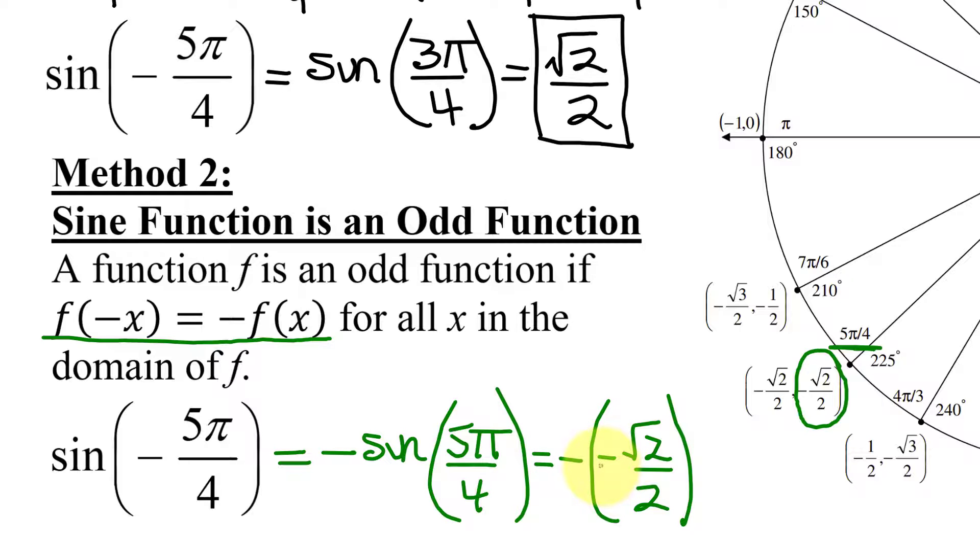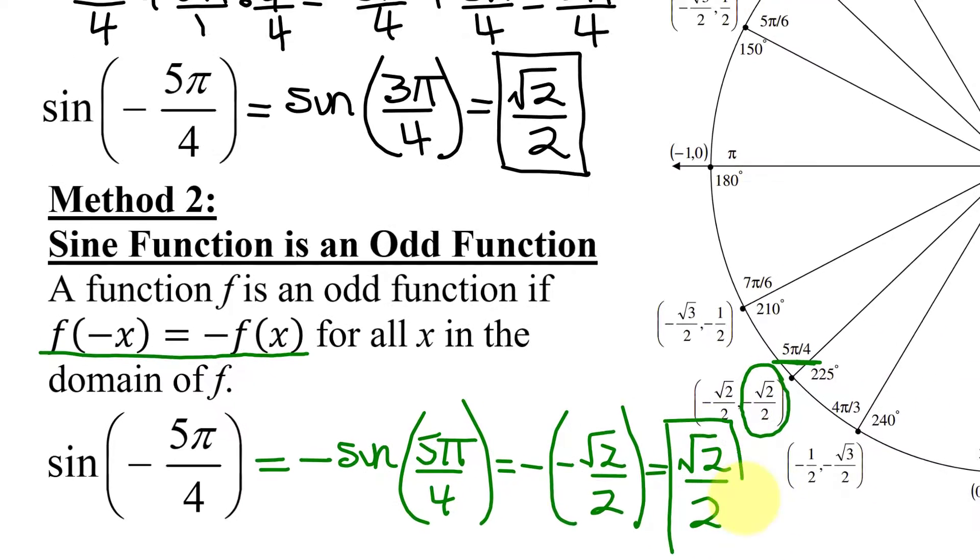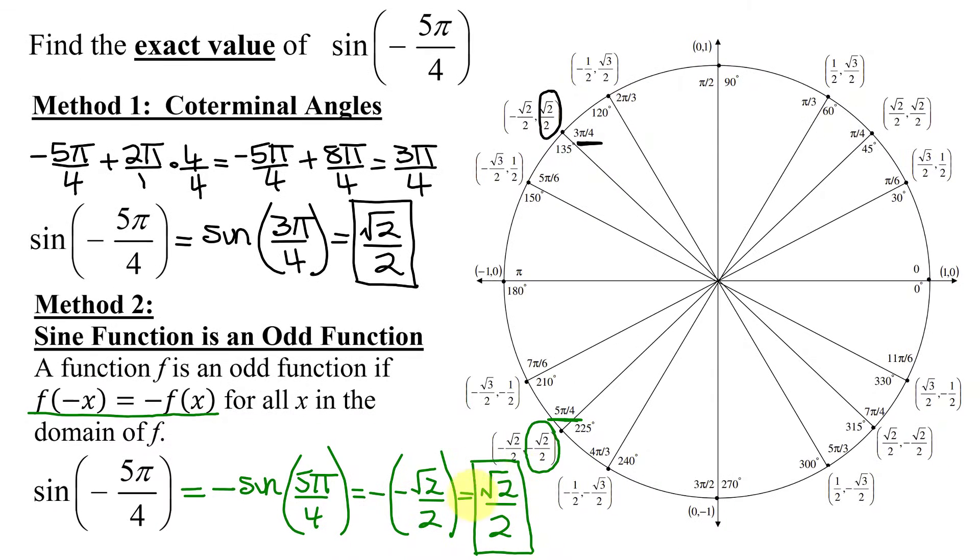What's the opposite of a negative? It's a positive, so my answer is just the square root of 2 divided by 2. Now did I get the same answer by method 2 as I got in method 1? Yes. Now it doesn't matter which method you use, pick the method you prefer.